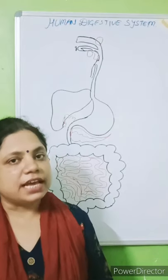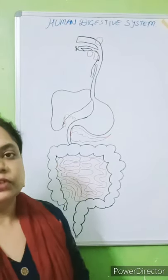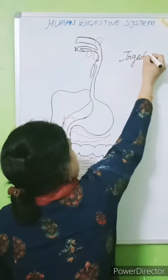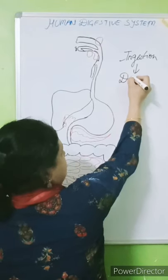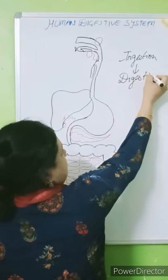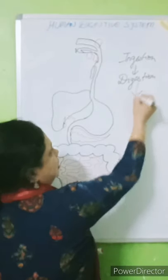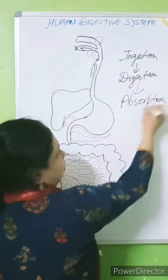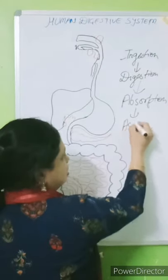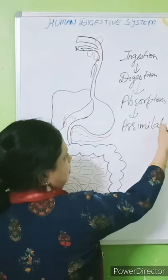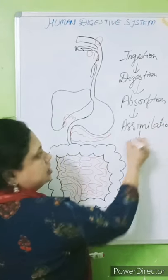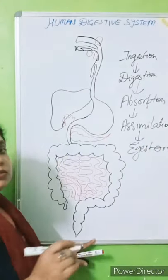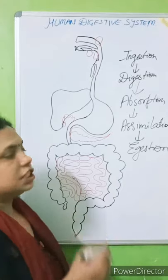There are five steps involved in nutrition. The first step is ingestion, the second step is digestion, the third step is absorption, the fourth step is assimilation, and the last step is egestion. These are the five steps which are involved in nutrition.